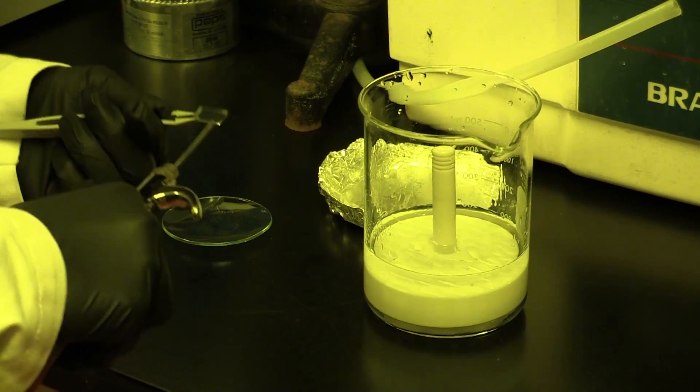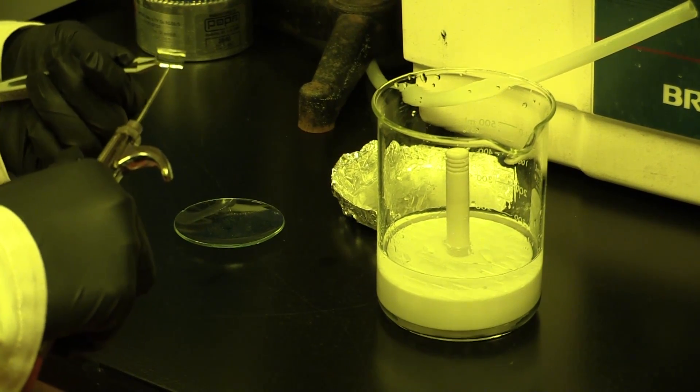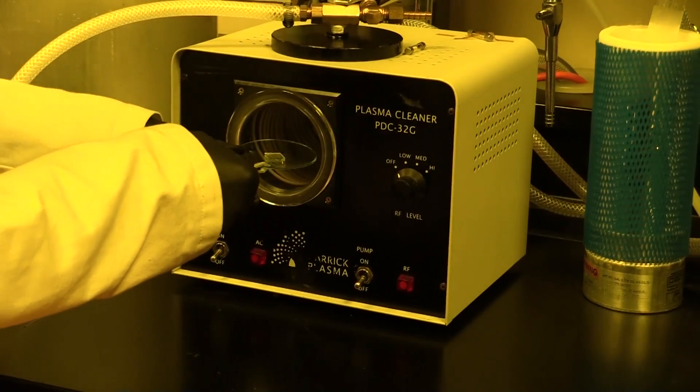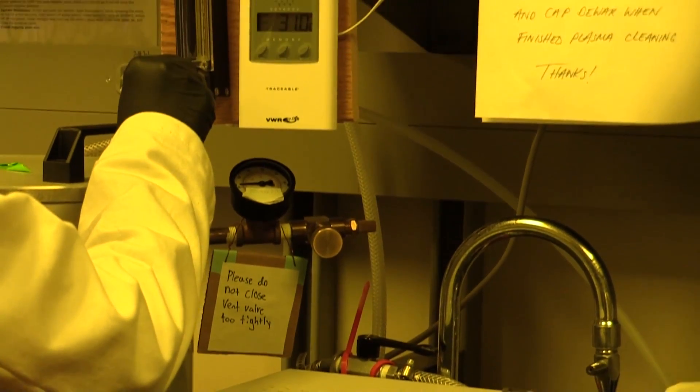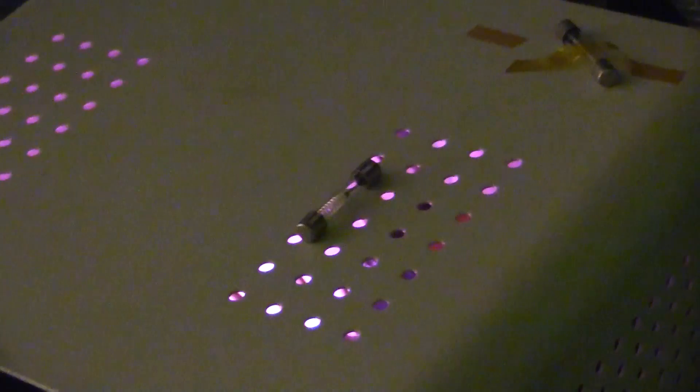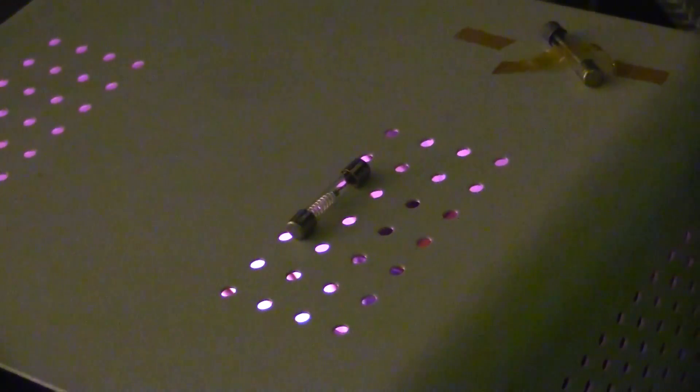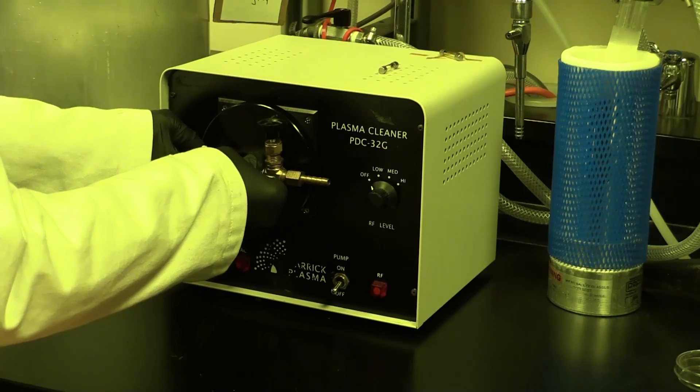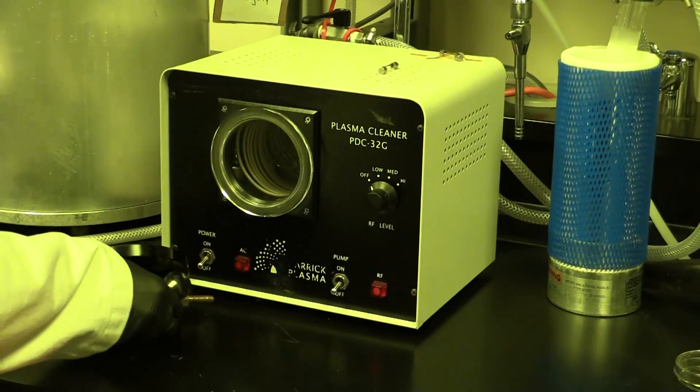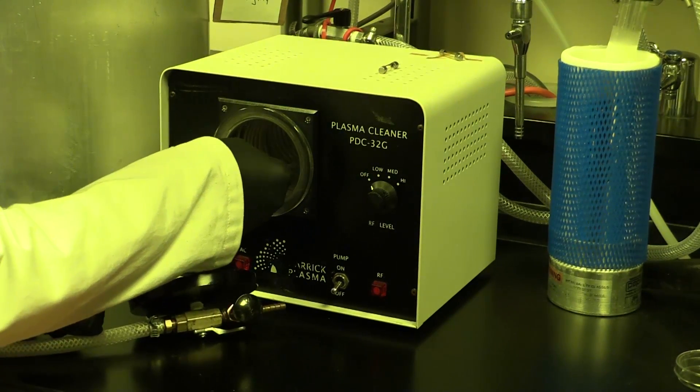Before we deposit the TiO2, we're going to plasma clean the FTO substrate. We plasma clean with pure oxygen at a flow rate of 100 milliliters per minute. The bright purple light is due to the ionization of oxygen gas and indicates that we are generating oxygen plasma. After 10 minutes of plasma cleaning, all residual organic substances are removed from the FTO surface.